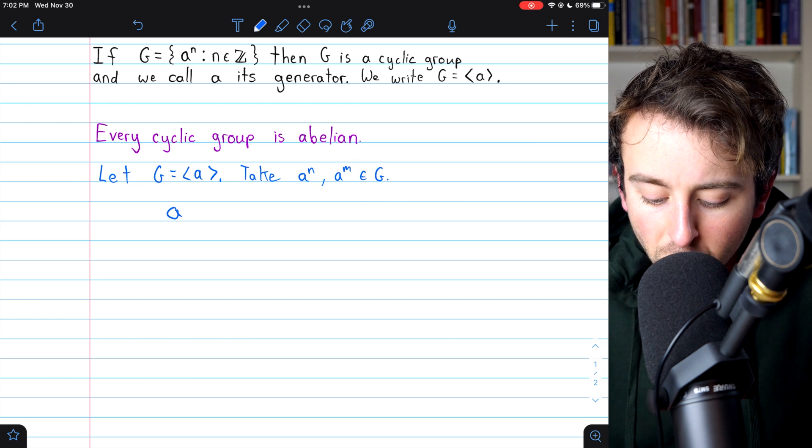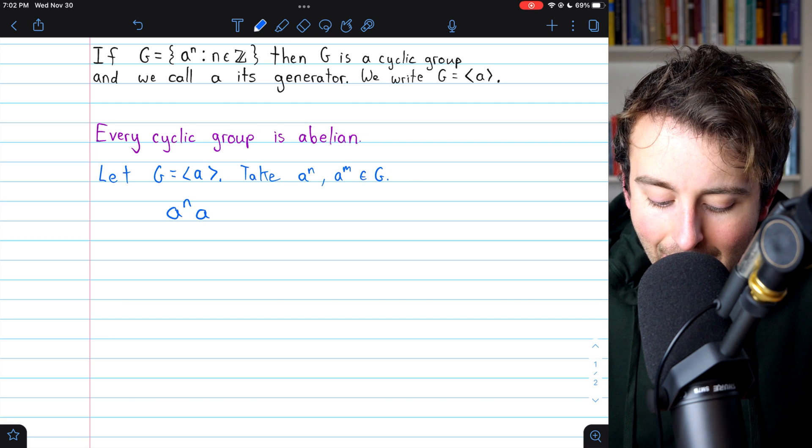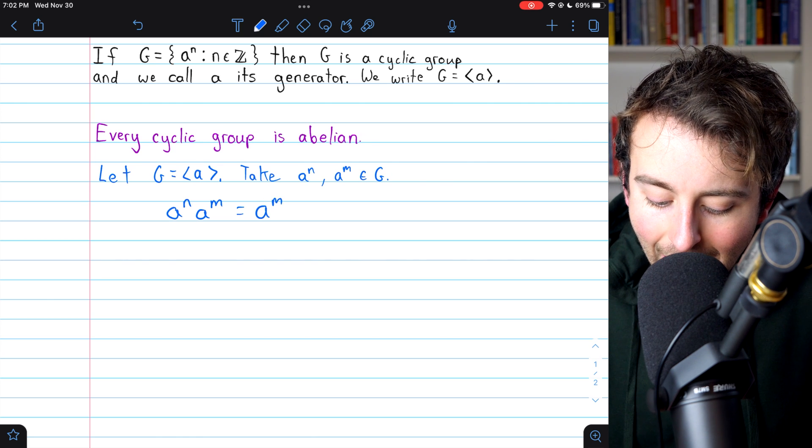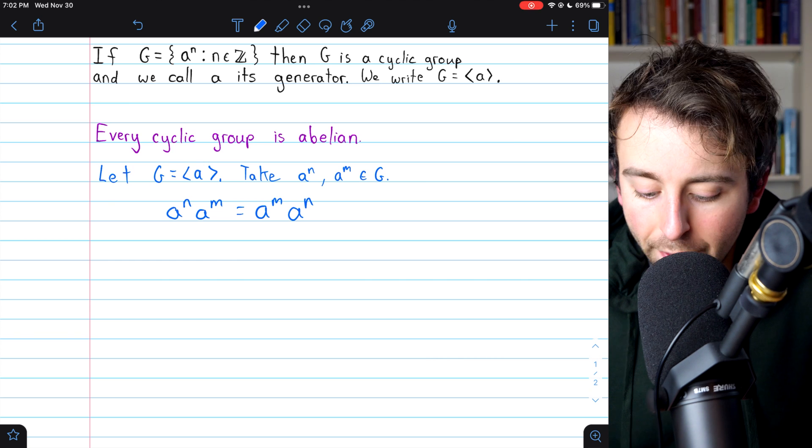And then our goal to show that G is abelian, we need to show that A to the N times A to the M equals A to the M on the left times A to the N on the right.